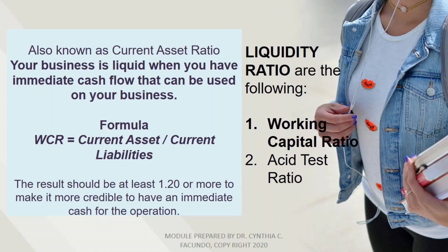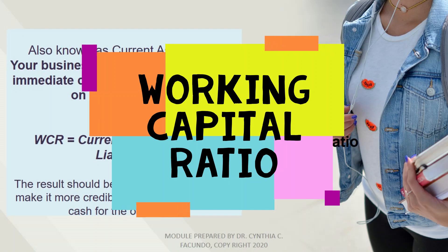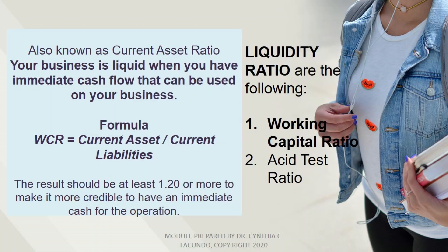Working capital ratio is also known as current asset ratio. Your business is liquid when you have immediate cash flow that can be used in your business. The formula is: working capital ratio equals current assets divided by current liabilities. The result should be at least 1.2 or more to be considered credible for having immediate cash for operations.